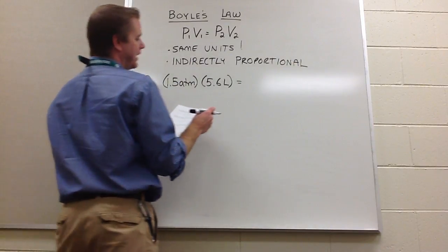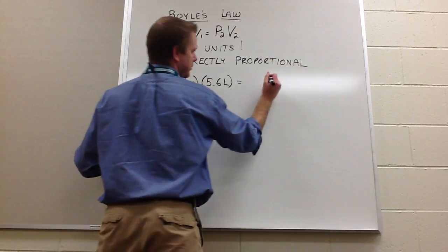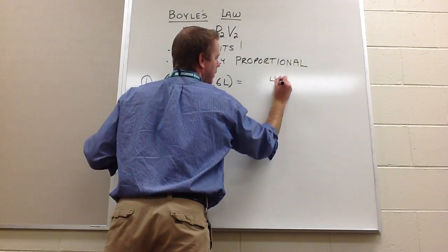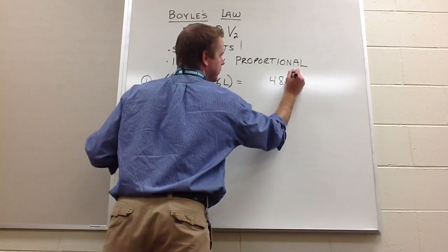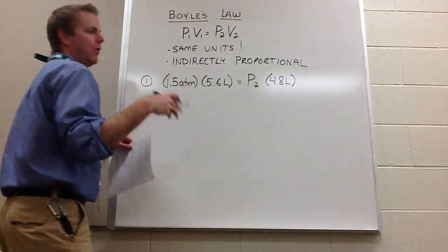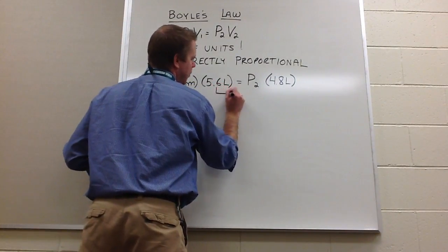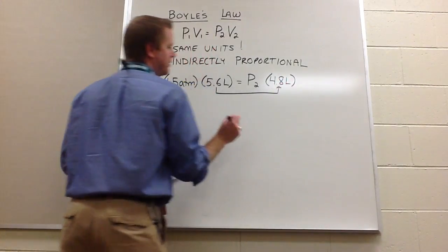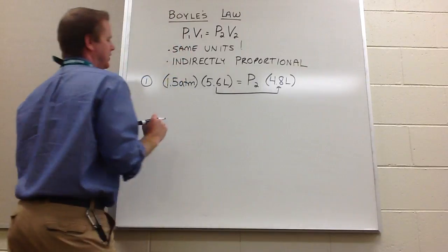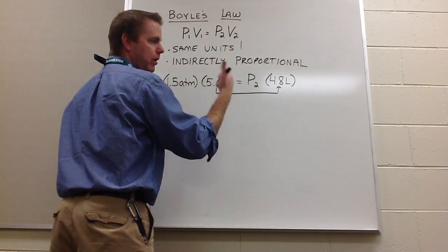That equals... and we compress the gas until its volume is 4.8 liters. So the new volume, V2, is 4.8 liters, multiplied by P2, the final pressure. Let's make a prediction: 5.6 to 4.8 means volume went down. If pressure and volume are indirectly proportional, we can predict that the pressure should go up.